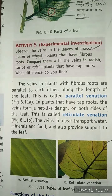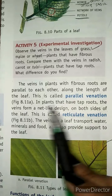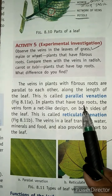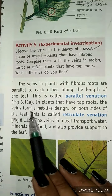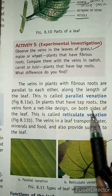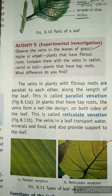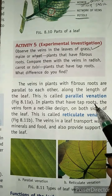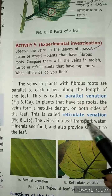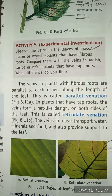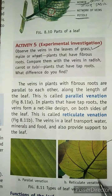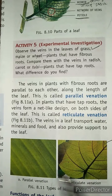In plants that have tap roots, the veins form a net-like design on both sides of the leaf, and this is called reticulate venation. If a plant has tap roots, its leaves will show reticulate venation — they are not parallel.